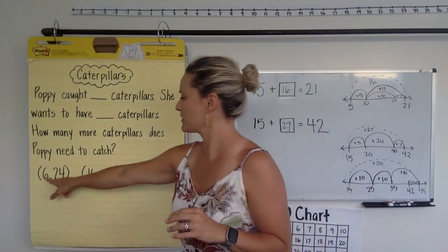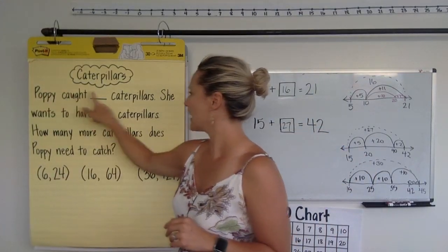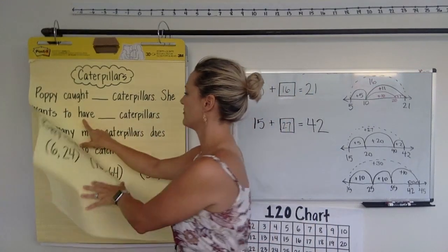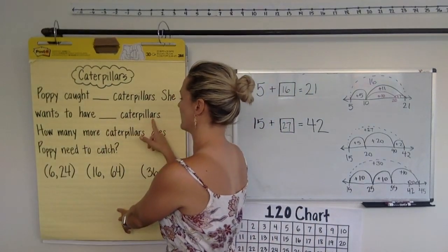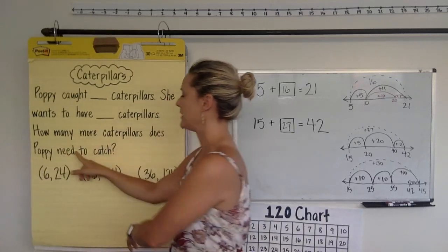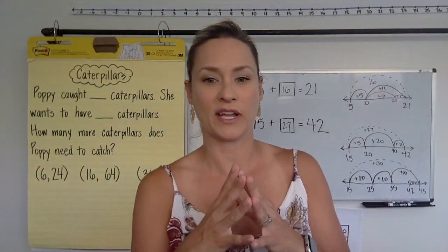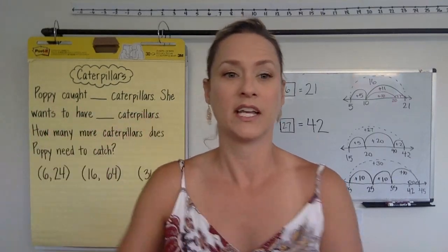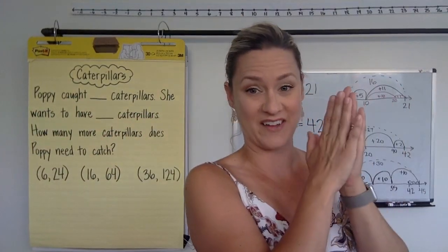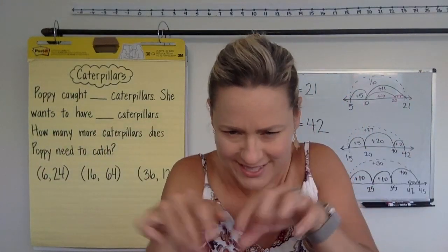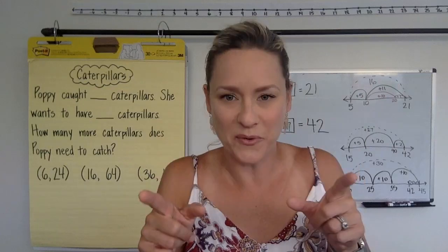All right. So, let's reread it with 6 and 24. Poppy caught 6 caterpillars. She wants to have 24 caterpillars. How many more caterpillars does Poppy need to catch? Okay. So, we know in the beginning she has already caught 6 caterpillars. In the end, she wants to have 24 caterpillars. And we have to know how many more caterpillars does she need to go collect.